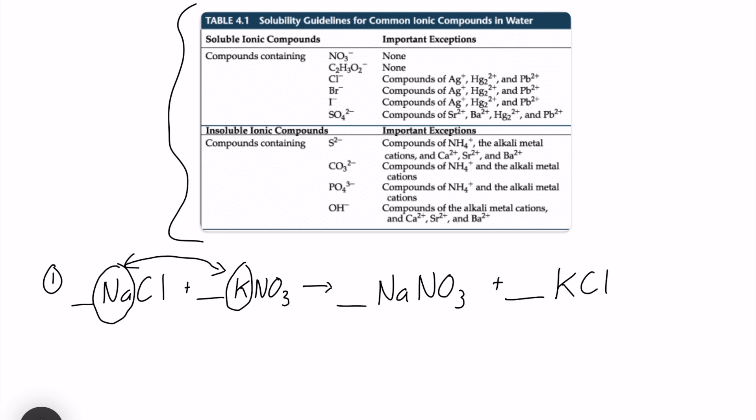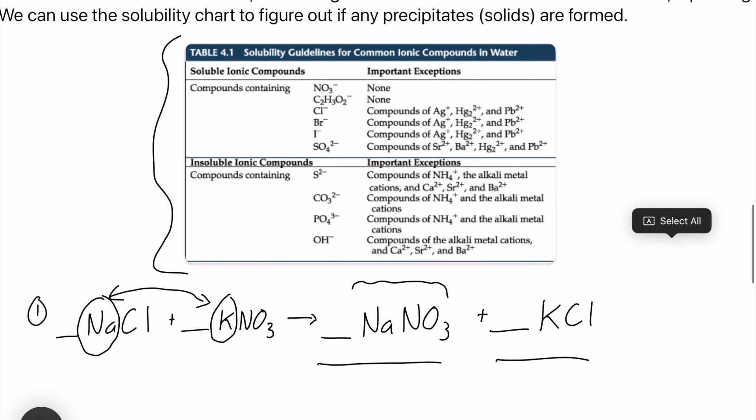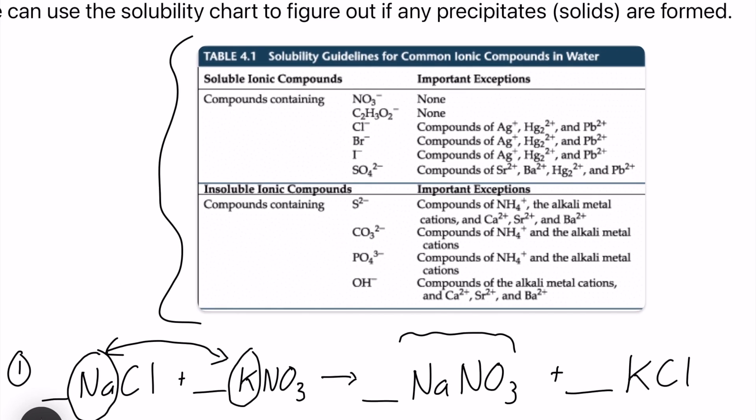And before we start balancing, let's make sure we actually have a product. Let's make sure we have a solid, a liquid, or a gas. In this case, we're probably going to be looking for a solid because we have our ionic compounds as products. Okay, so first off, we are going to look for either sodium or nitrate in this table. And if I zoom in a little bit here, I'll show you this a little bit better.